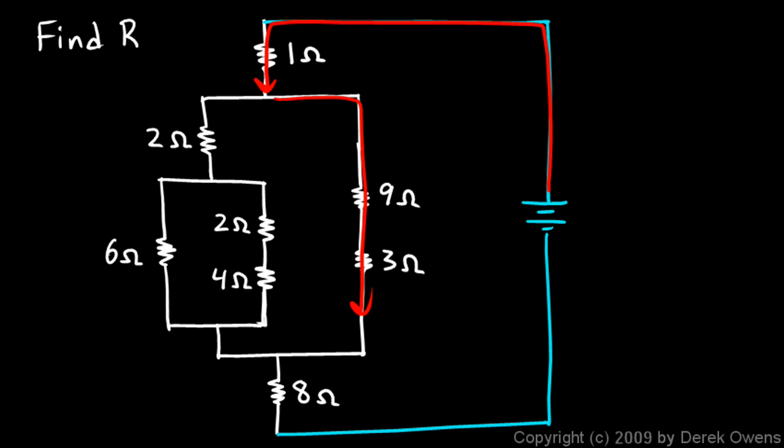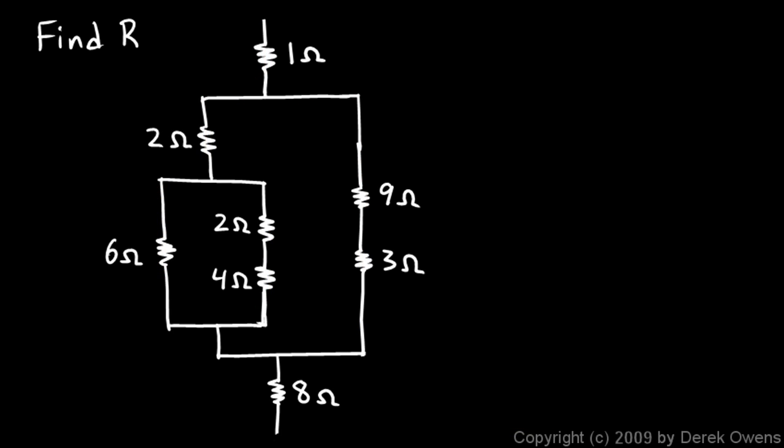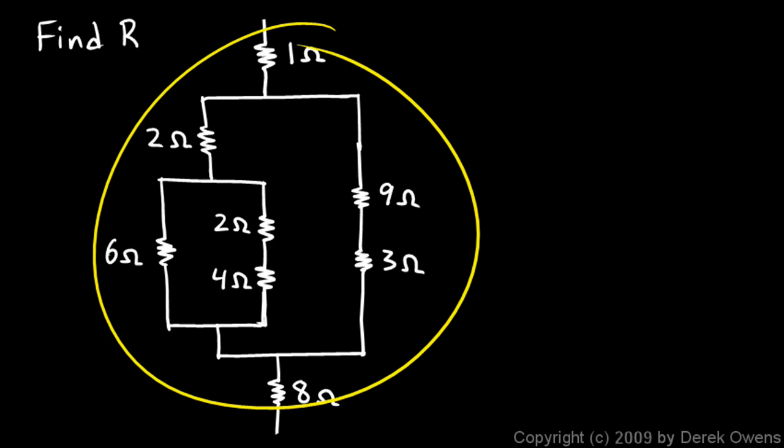Some goes down here and some goes over here and branches again, and then all these currents rejoin and flow back to the battery. Now we're not worried about the voltage and the current in this particular problem. We simply want to know what the total resistance would be of this network.